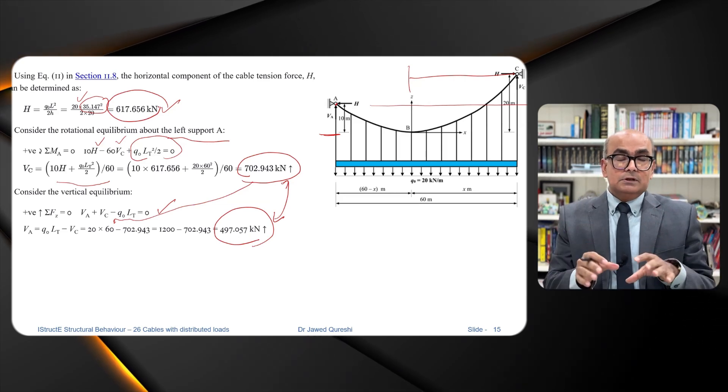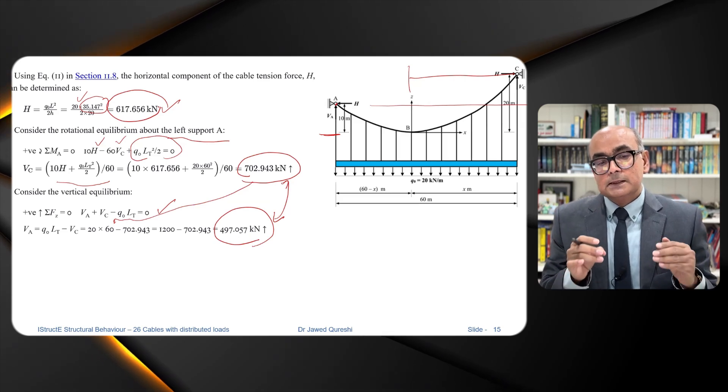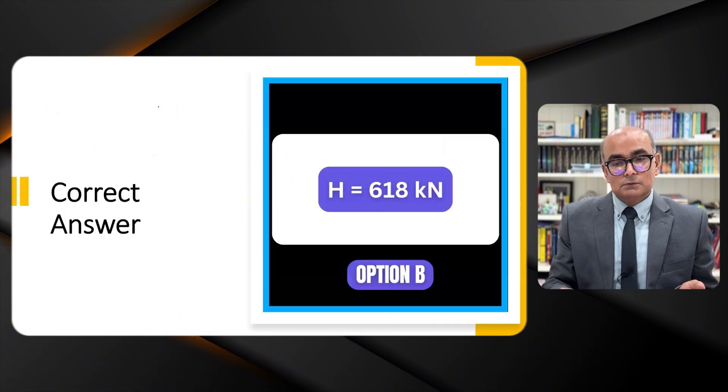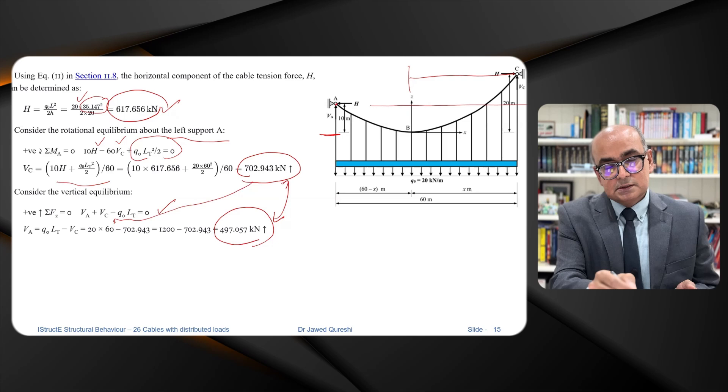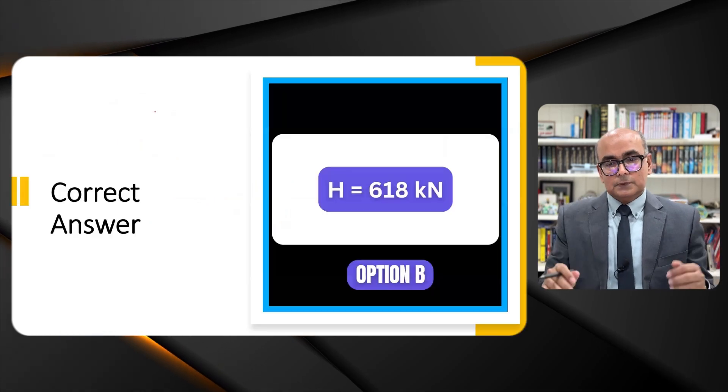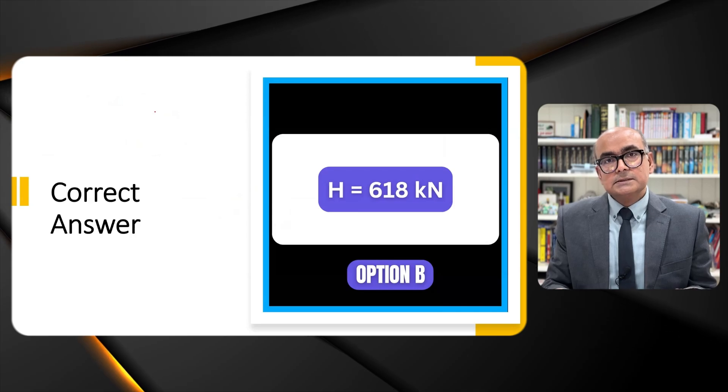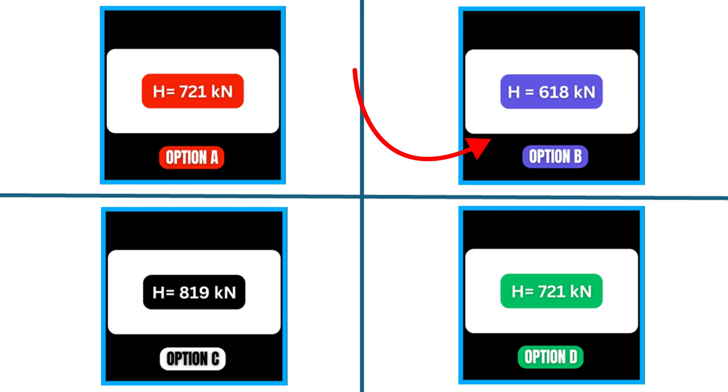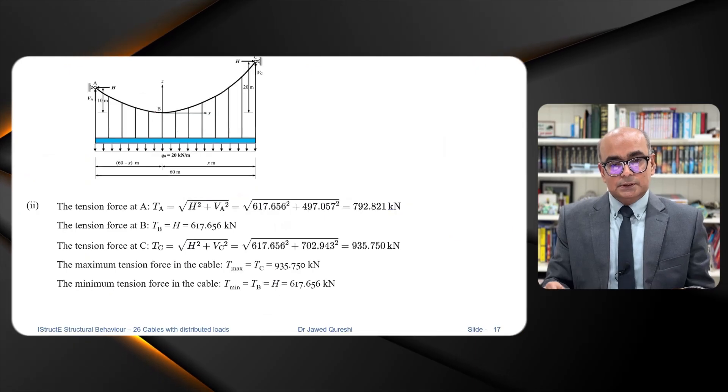In the question which is given to you, you are just required to find out the horizontal reaction. You are not required the other parts. So the correct solution will be 617.65 which is roughly equal to 618. So option B is the correct option. You had couple of options there. The option B is the correct one. Let's move to the other parts of the question.